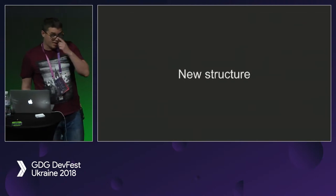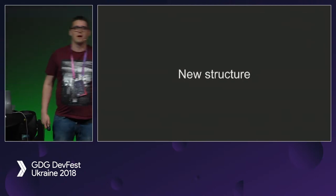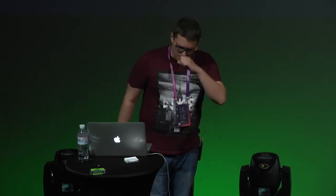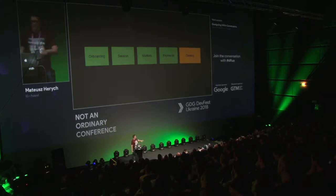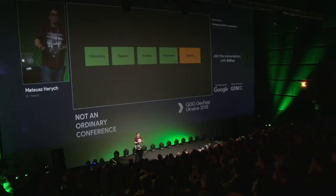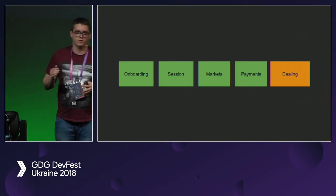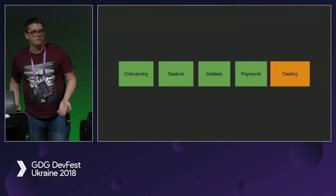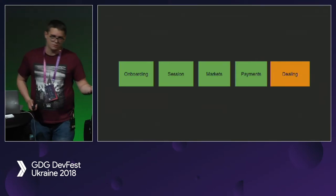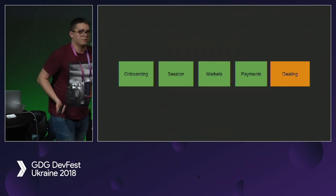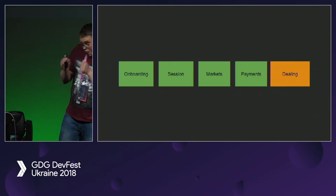We decided to do something about it and came up with a new structure in January 2018. My manager said go for it after I showed him it took an hour and a half to do a clean build. We came up with a bunch of modules: onboarding for creating accounts, session for authorization, markets — we're a trading app — so markets handles searching and favoriting markets, payments for topping up your account, and dealing, which is the core functionality. That's the main reason people use the app; all other features are meant to funnel you to the dealing module.